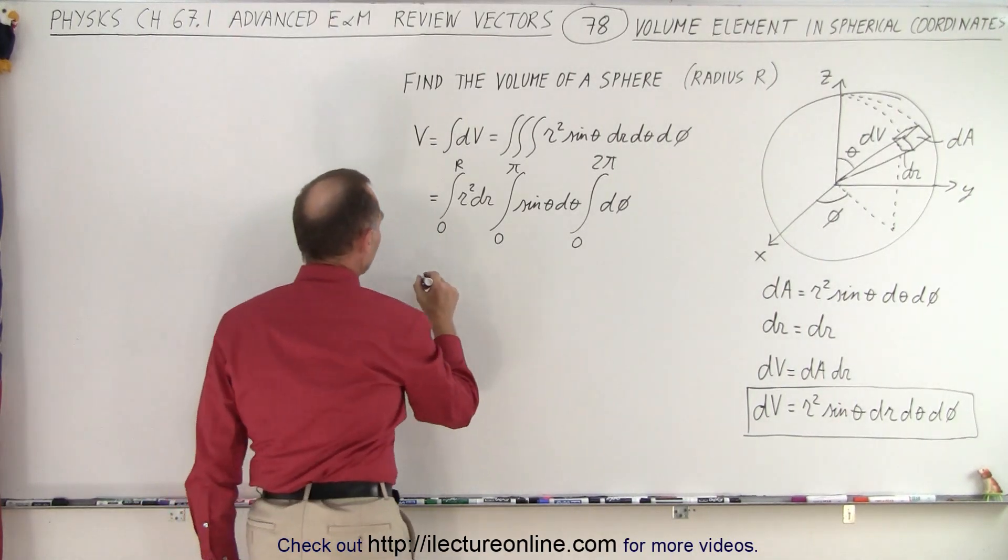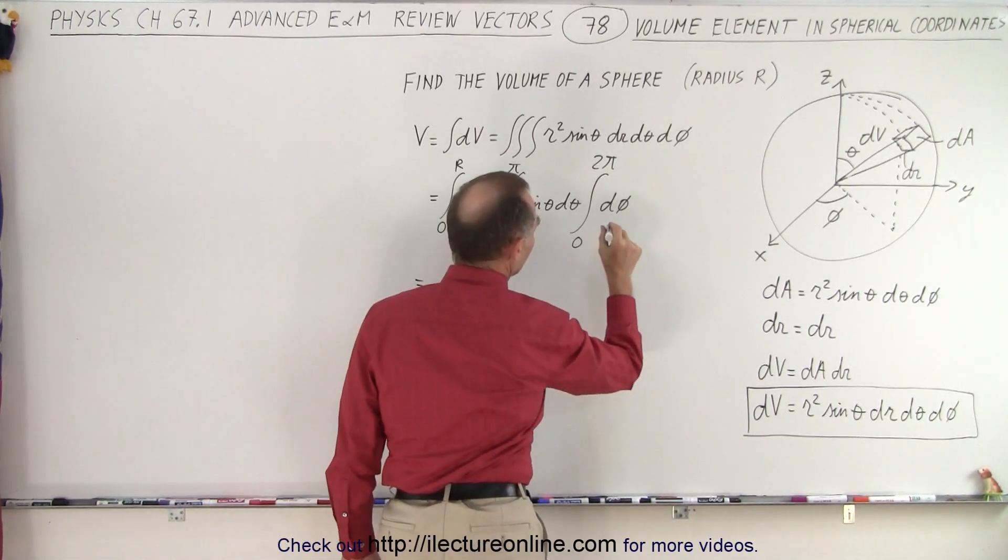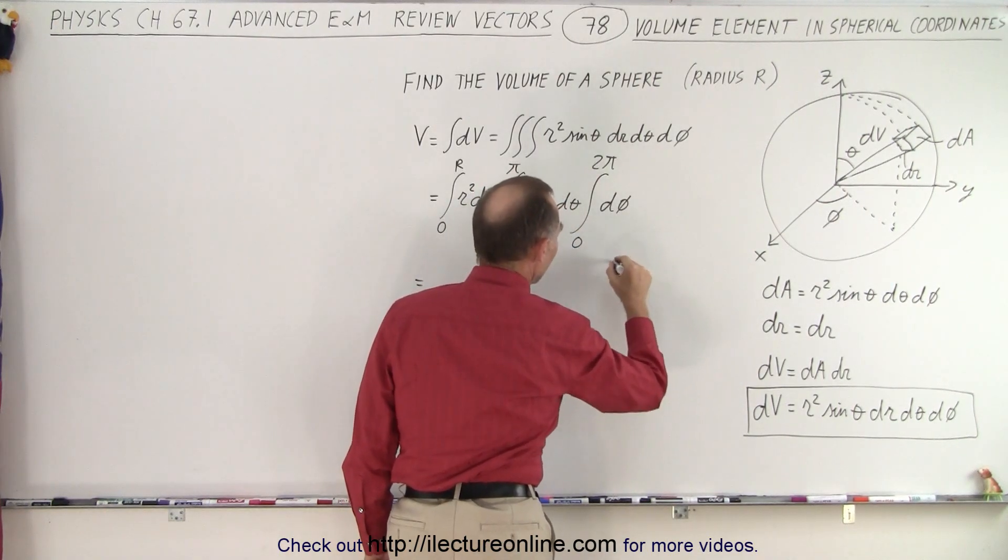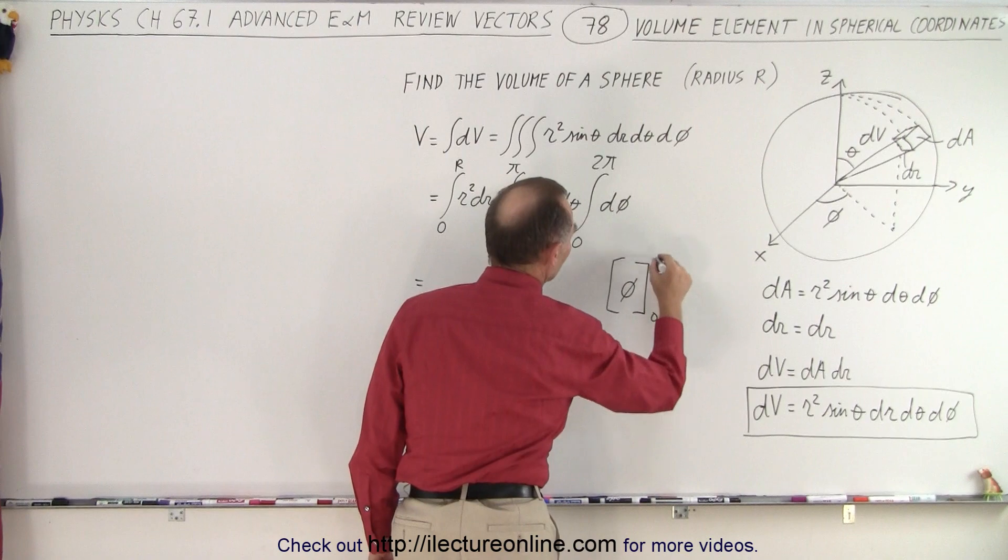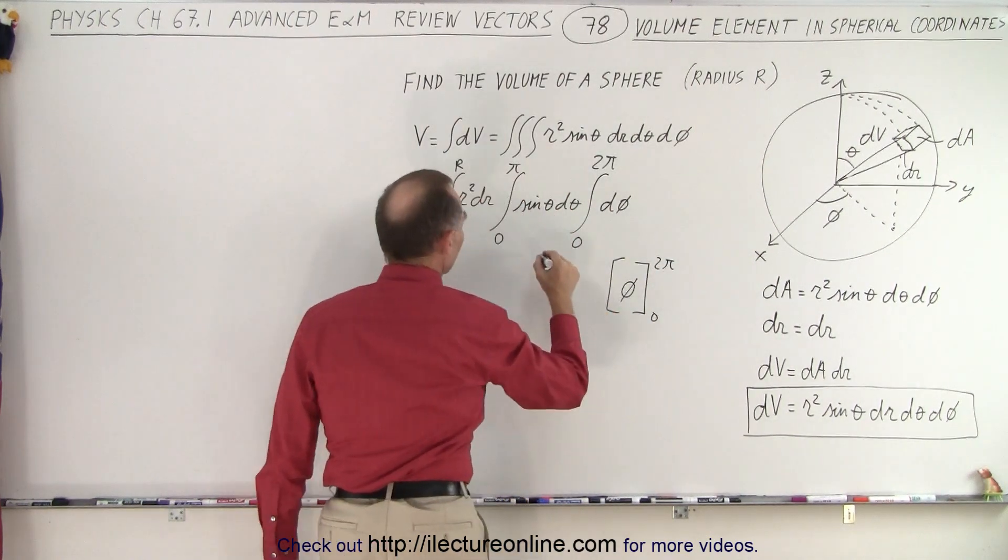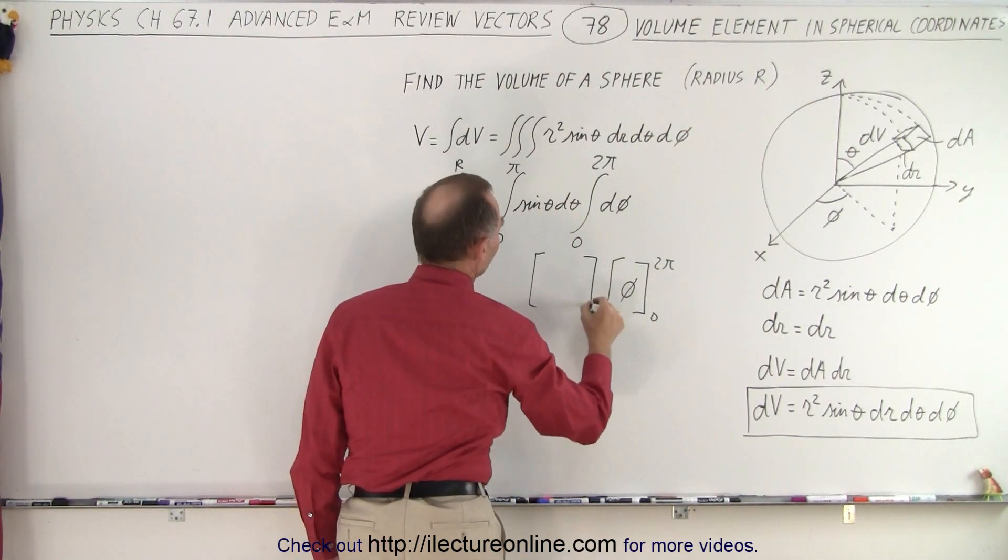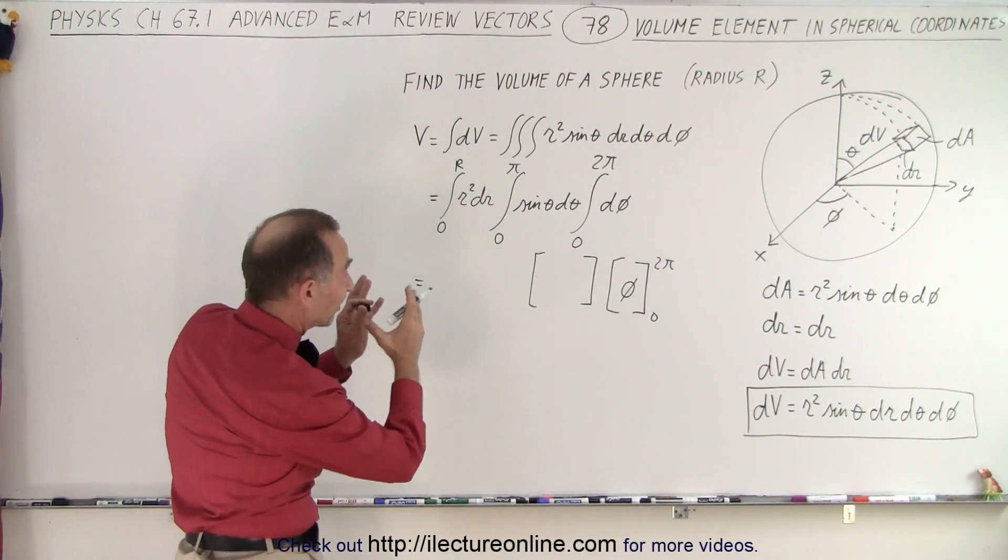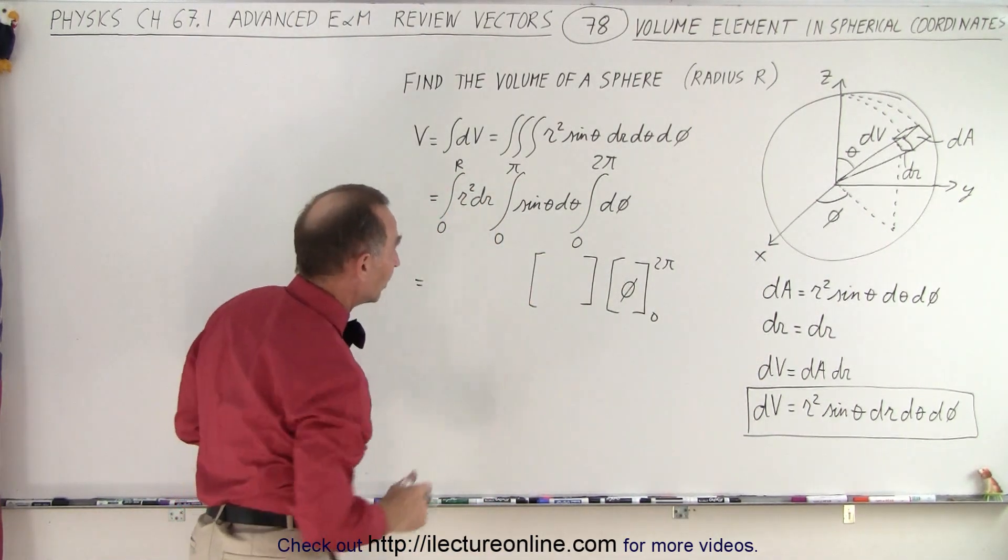So integrating each separately. So this is going to be equal to the integral of dφ is simply equal to phi evaluated from zero to two pi. And we multiply that times the integral of sine of theta d theta. Now the reason I can do that is because I can separate all the variables into three separate integrals.